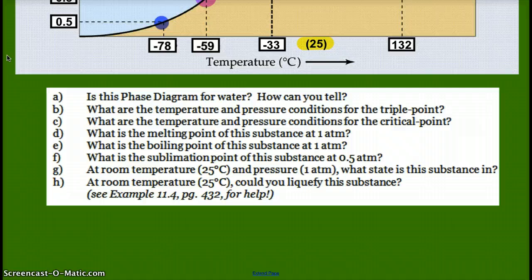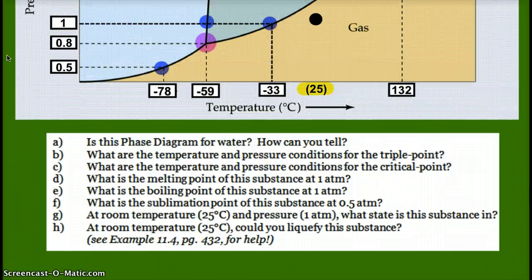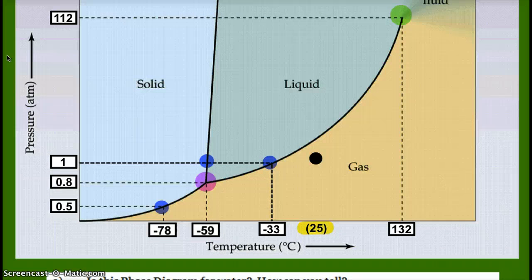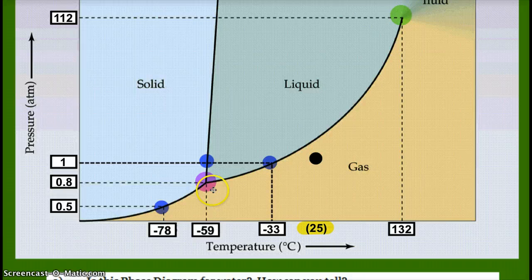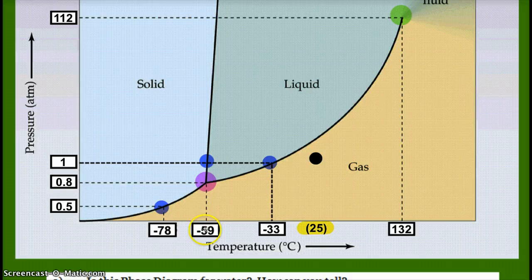Second question, what are the temperature and pressure conditions for the triple point? Our triple point is where all of our phases exist at one time, and that's the pink spot right here. So, it's at 0.8 atmospheres and negative 59 degrees Celsius.